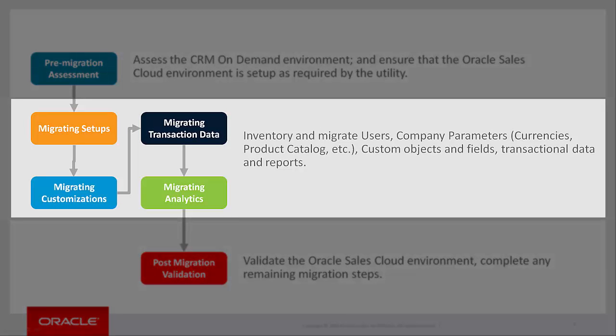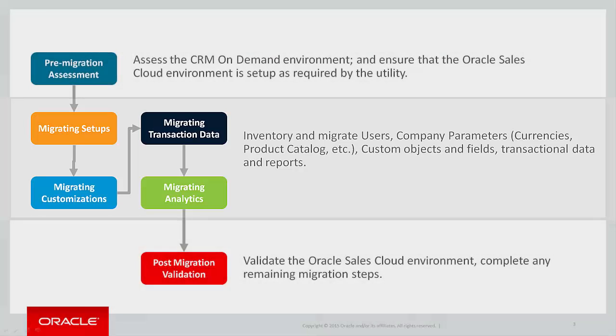Next, the power of the utility really comes into play. It will inventory and automatically create fields, objects, associations, and system data such as product catalog, sales methodology, currencies, and more — all based on what is in CRM-on-Demand. These steps save a huge amount of time and provide an unparalleled level of accuracy, avoiding human error.